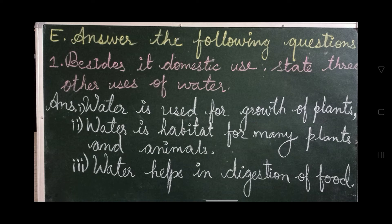Now let us see Question E: Answer the following questions. Number 1: Besides its domestic uses, state three uses of water. Answer — Number 1: water is used for growth of plants. Number 2: water is a habitat for many plants and animals. Number 3: water helps in digestion of food.